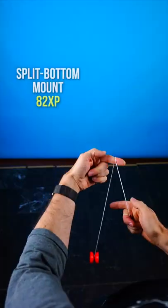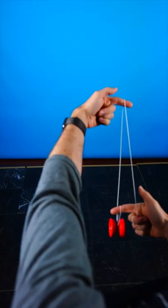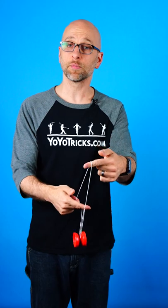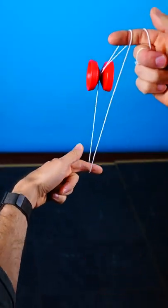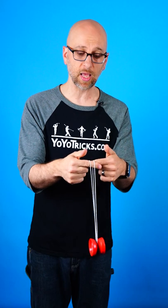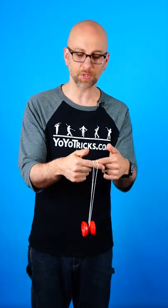You are going to start with a Split Bottom Mount, which we have taught before, and then you are going to rock the yoyo forward. As it comes back toward you, drop your opposite hand under the yoyo, then bring it together with your yoyo hand, and then you will see that that naturally keeps the yoyo swinging.